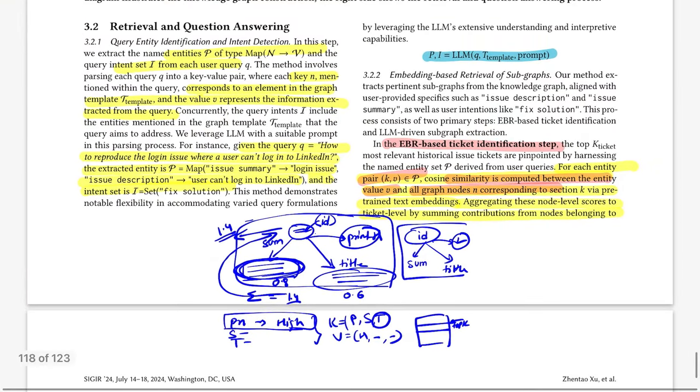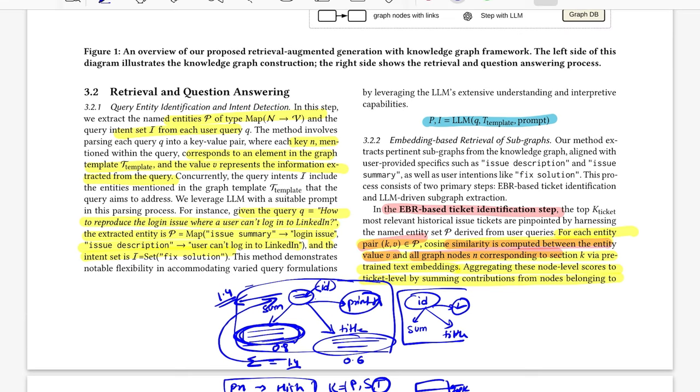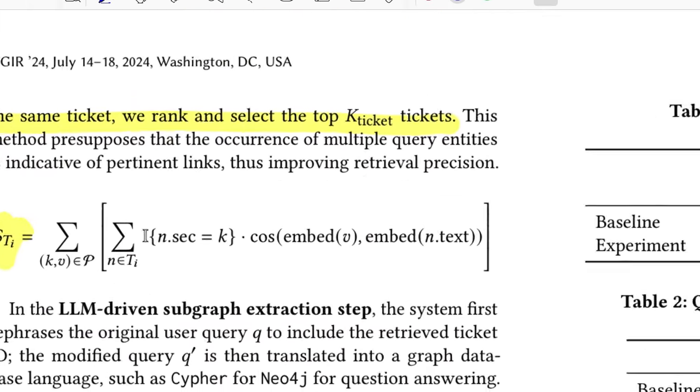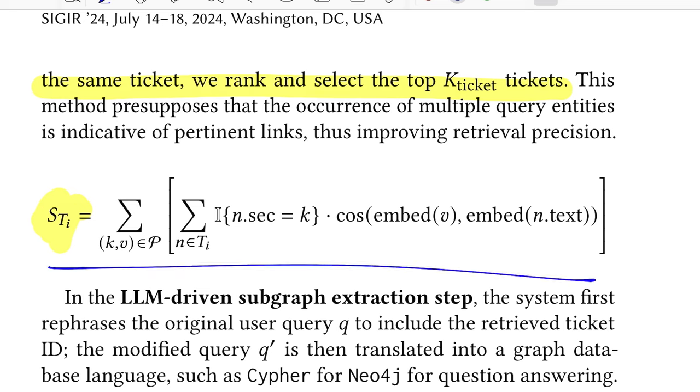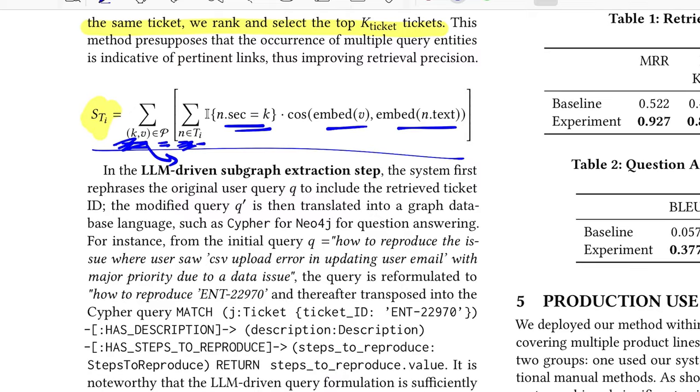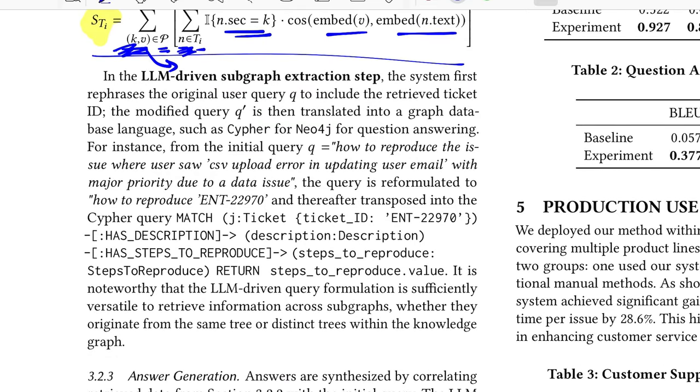Then you pick certain top K tickets based on this cumulative leaf level scores that represent the entire ticket score. So this is how the retrieval is done for any question to come up with what all subgraphs are we really interested in. The same stuff is mathematically written in this format: for every key-value pair that you extract and for every node in the tree, wherever we can calculate the similarity, you take the embedding of the value which is what you've extracted from the query and the text that is mentioned in that node, and you do it for all the nodes across all the key-value pairs.